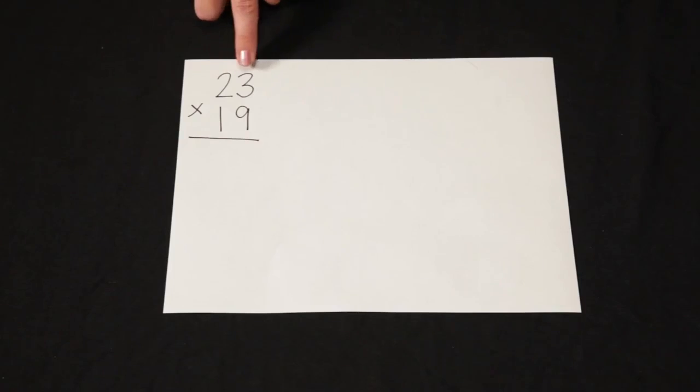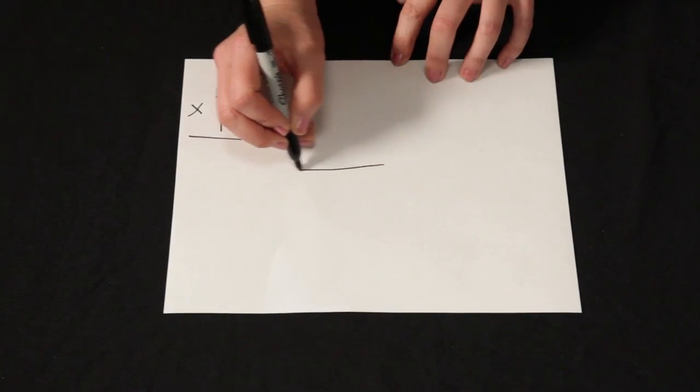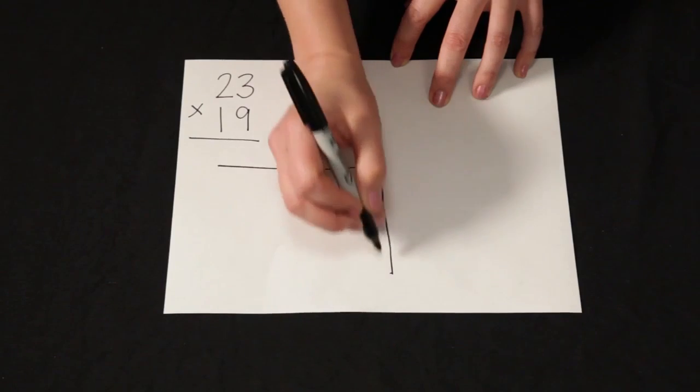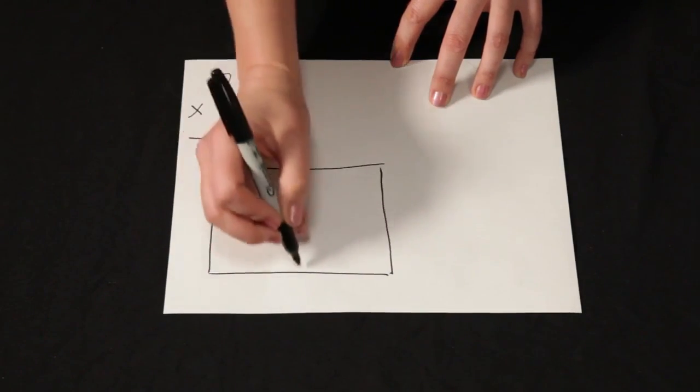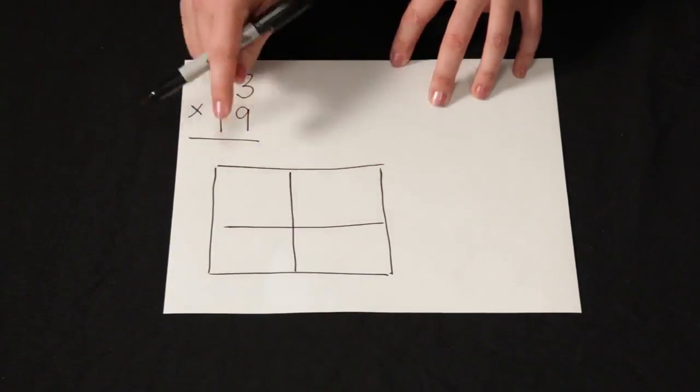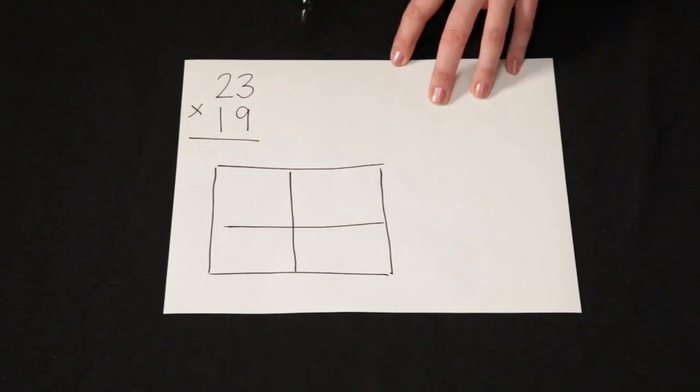So here with the area model I have a two digit times a two digit number, which means I'm going to draw a grid with two rows and two columns, just like we did with lattice. So two rows times two columns.